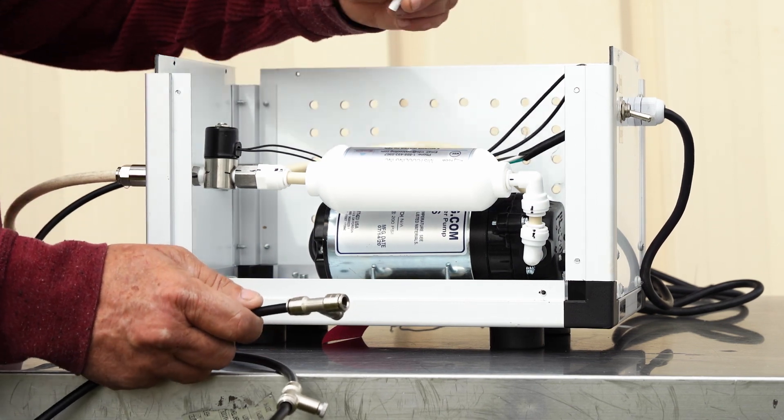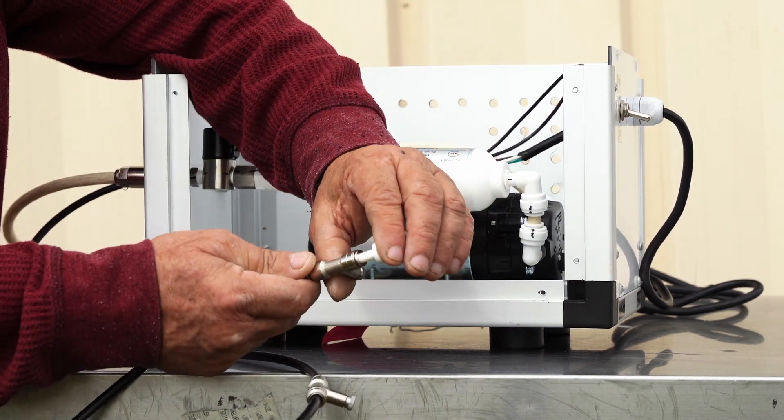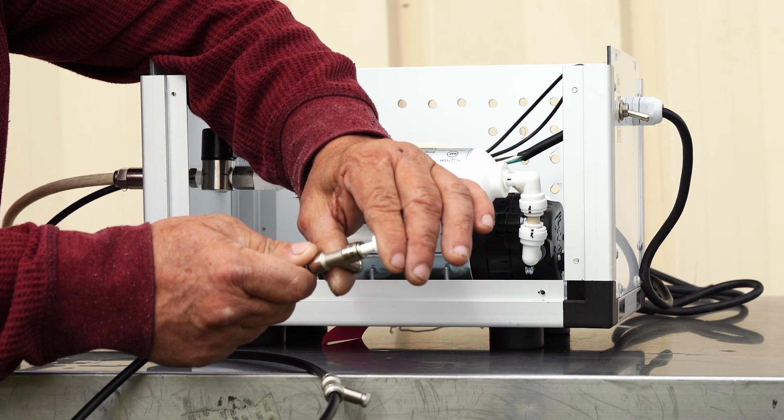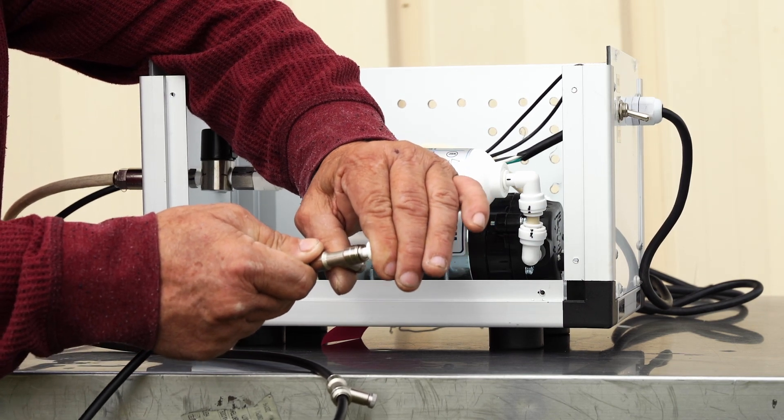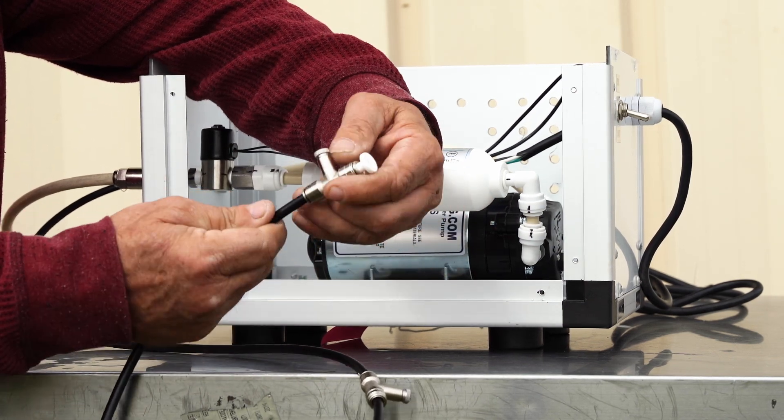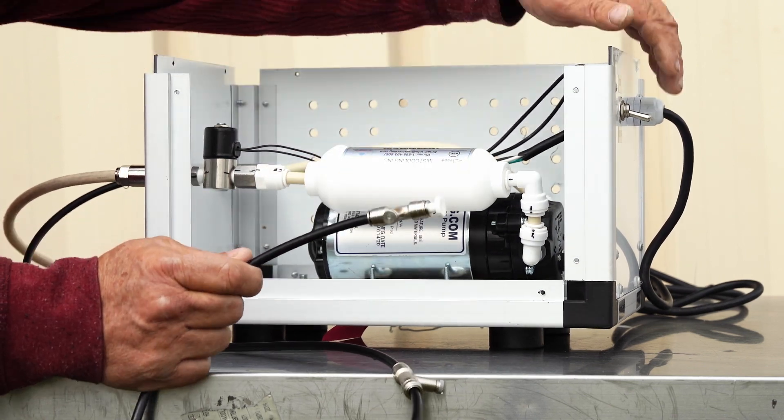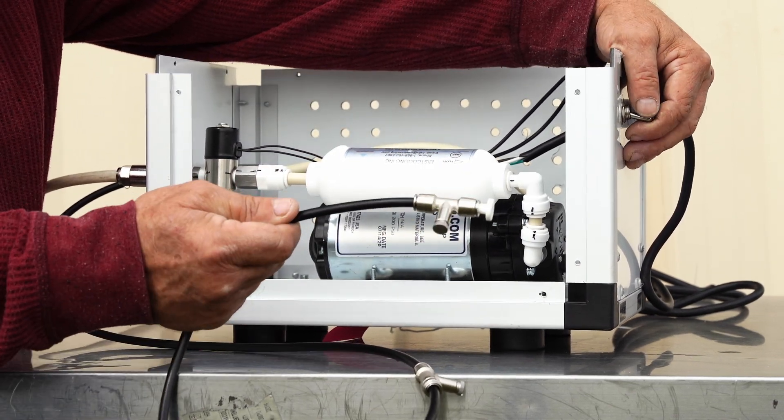And install this end plug into the very end of your line. That's where we bled all the air out. Push it in until it won't go any farther. Then you're ready to go. You just turn your pump on.